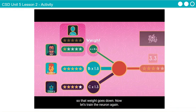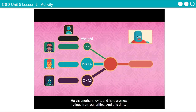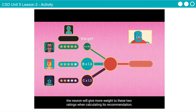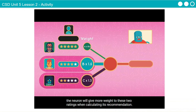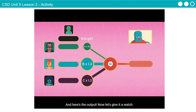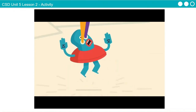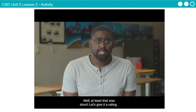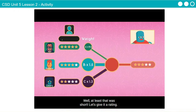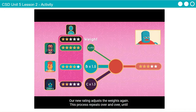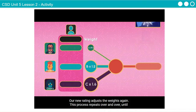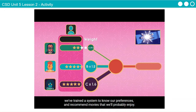Now let's train the neuron again. Here's another movie, and here are new ratings from our critics. This time, the neuron will give more weight to Bowie and Casey's ratings when calculating its recommendation. And here's the output. Our new rating adjusts the weights again. This process repeats over and over until we've trained a system to know our preferences and recommend movies that we'll probably enjoy.